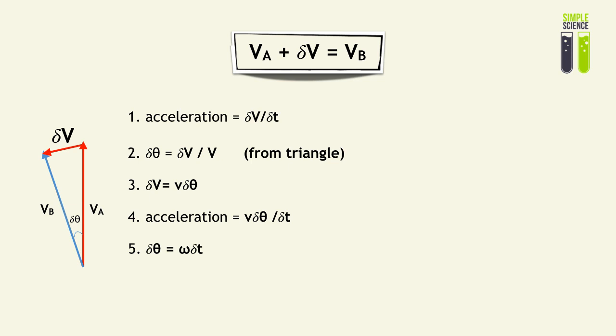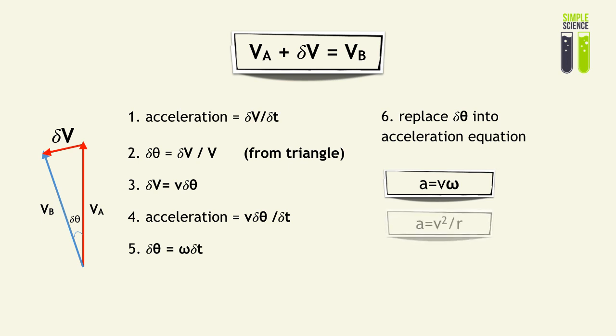For number six, the very important step is to replace delta theta from the omega equation into the acceleration equation. You will cancel out the delta T's and the delta thetas. And you would get acceleration is equal to V multiplied by omega. Acceleration equals linear speed multiplied by angular speed. Very important concept.